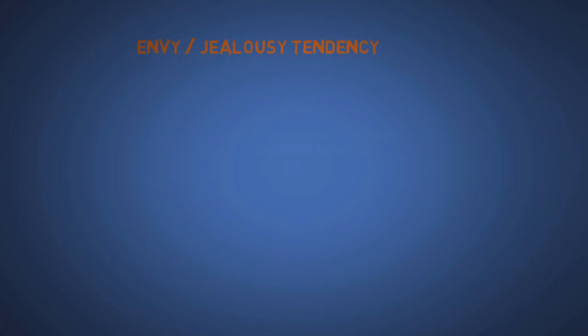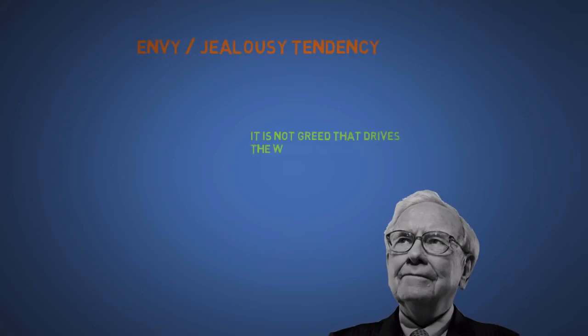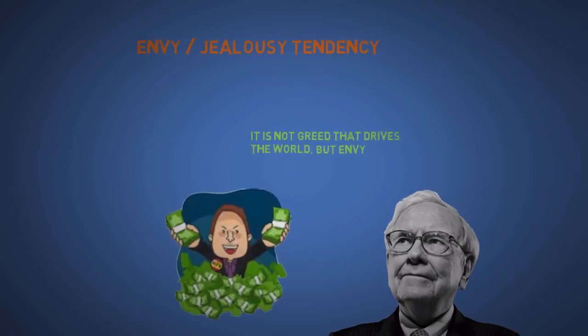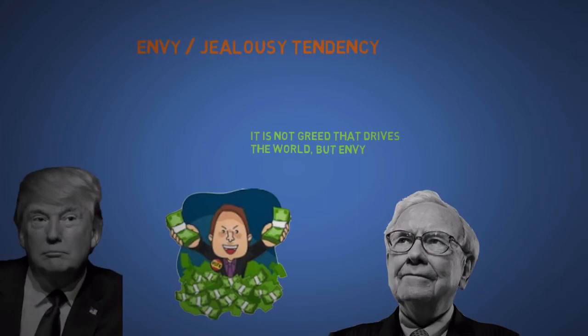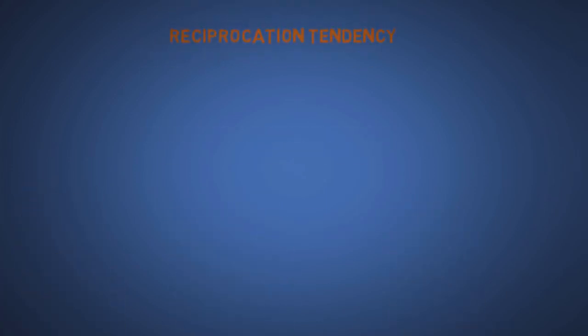The eighth is envy slash jealousy. This is self explanatory. Warren Buffet says it is not greed that drives the world, but envy. So be careful with this one, as showing off too much might make people dislike you. Like this is one of the reasons some people don't like Donald Trump.